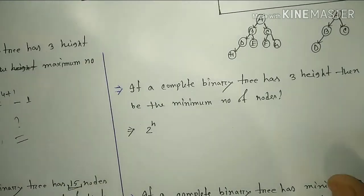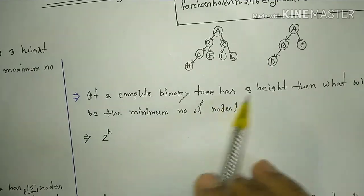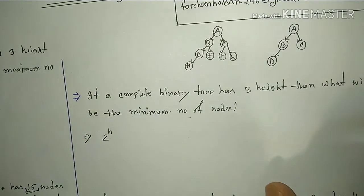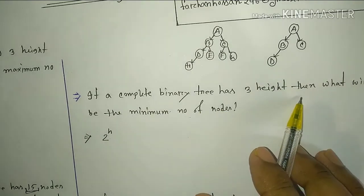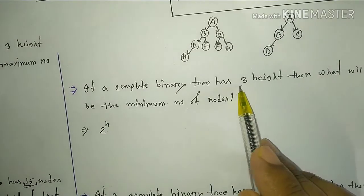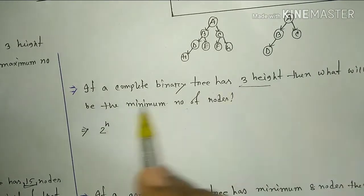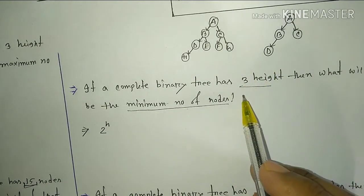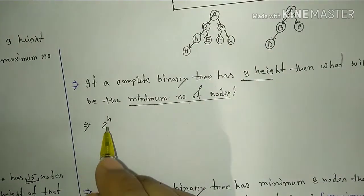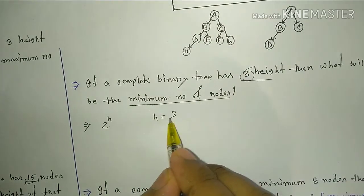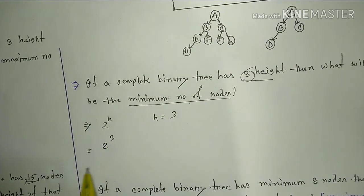Now the next question: if a complete binary tree has height 3, what will be the minimum number of nodes? Using the formula from complete binary tree with height h, the number of nodes is 2 to the power h, which for height 3 gives us 2 to the power 3, meaning it is 8.